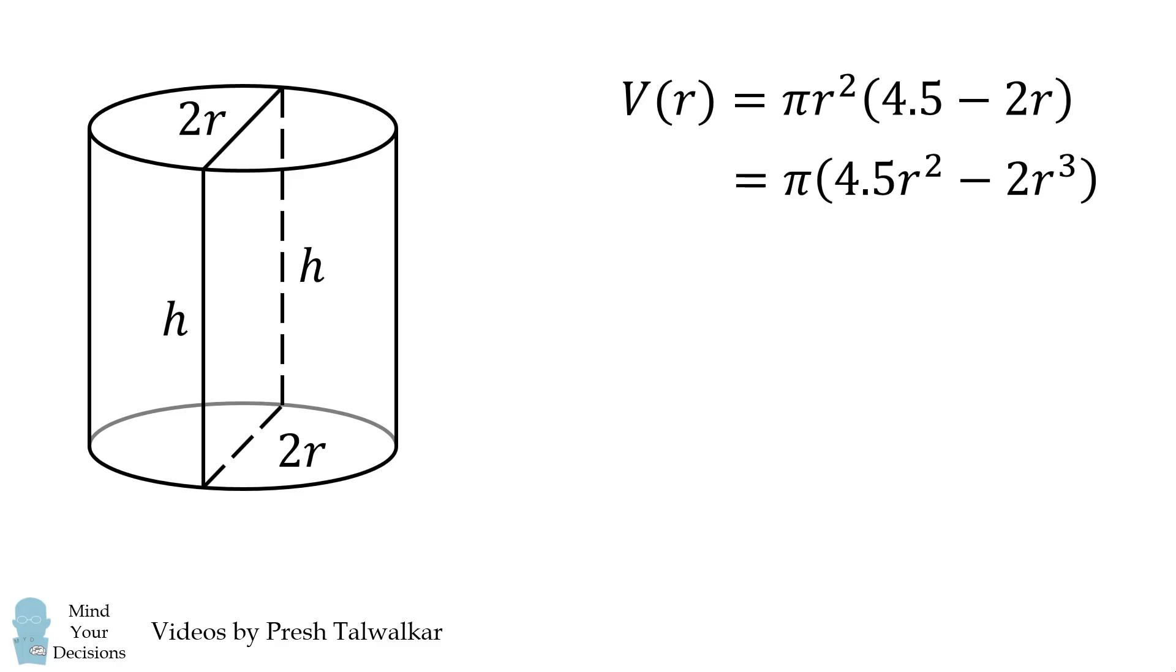To do that, we'll take the derivative and set it equal to 0. We get a quadratic equation. We can divide both sides by π, and then factor, so there are two possible values for r.